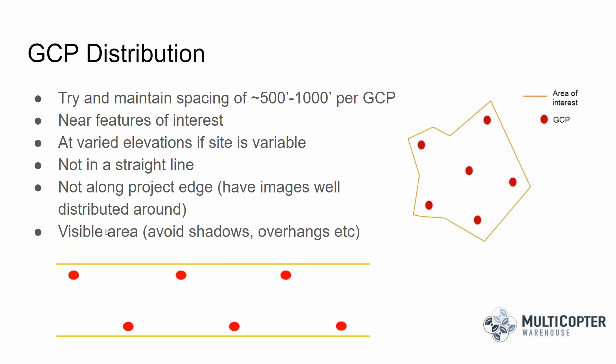Think about the visible area you're working in. Try to avoid having GCPs near tall buildings or obstructions that might make them harder to see in photos. Have your GPS points out in open areas that avoid shadows, overhangs, and tall buildings. Improve the visibility as much as possible.